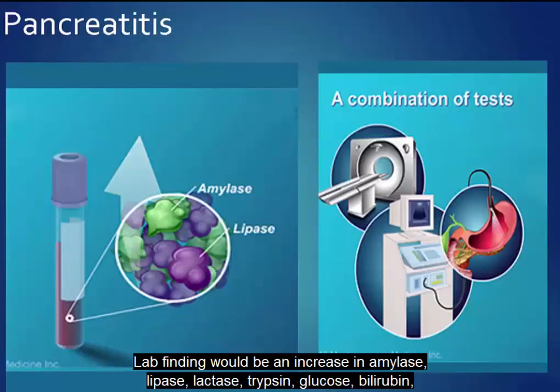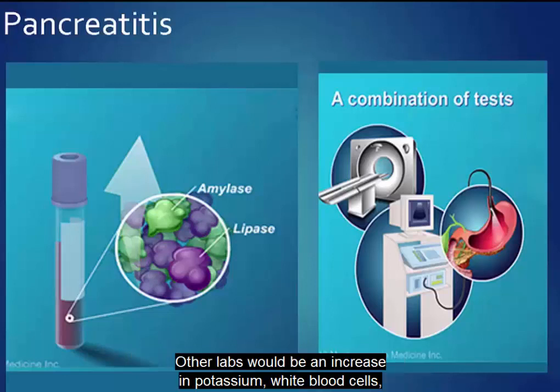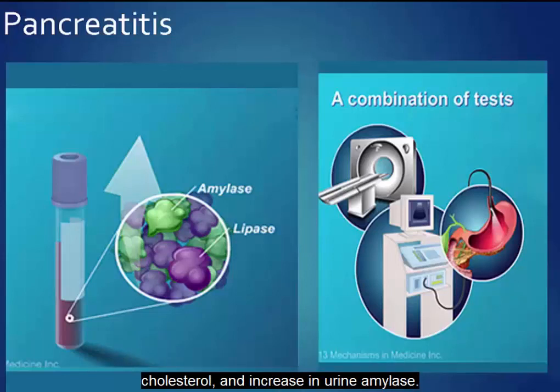Lab findings would be an increase in amylase, lipase, elastase, trypsin, glucose, bilirubin, alkaline phosphatase, lactate dehydrogenase, liver enzymes like AST and ALT. Other labs would show an increase in potassium, white blood cells, cholesterol, and urine amylase.